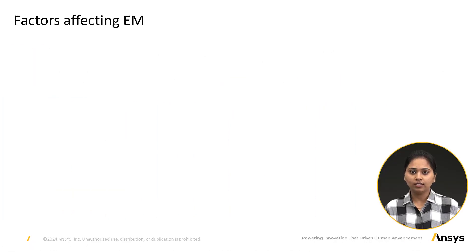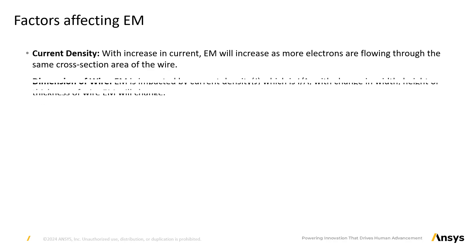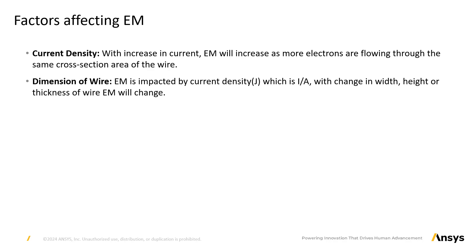Let's discuss the factors that impact electromigration. Current: when current flows through a conductor with a current density J, an increase in the current will lead to a greater number of electrons moving through the same cross-sectional area, amplifying the electromigration process as more electrons collide with the atoms. Dimensions of wire: if we decrease the width of the conductor through which the current is flowing, the same current will flow through a smaller cross-sectional area, resulting in more collisions of electrons with ions and leading to higher EM. We can conclude that current density impacts electromigration.